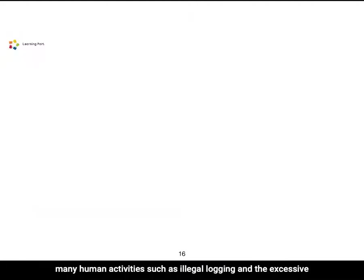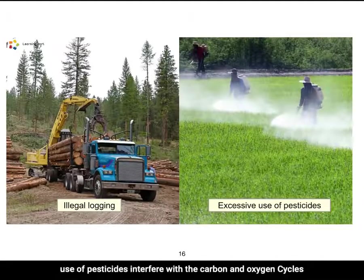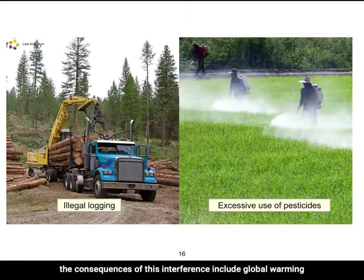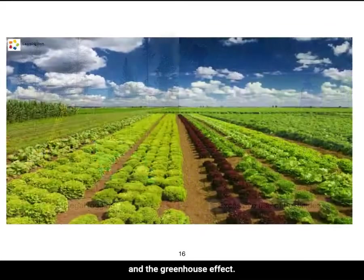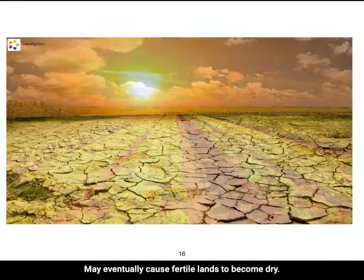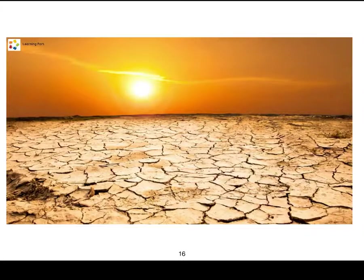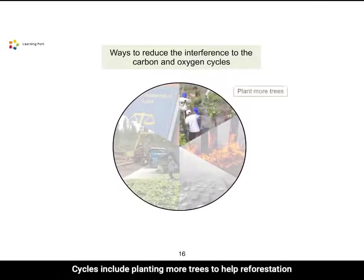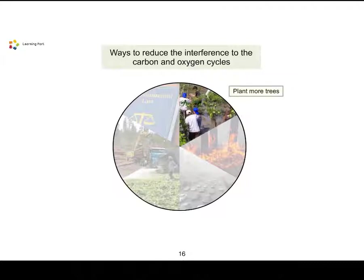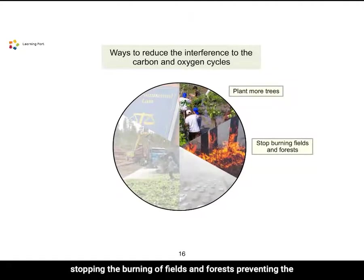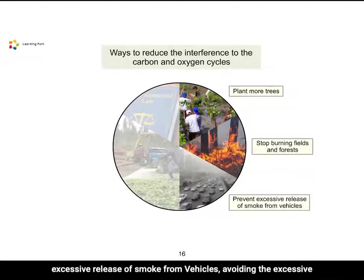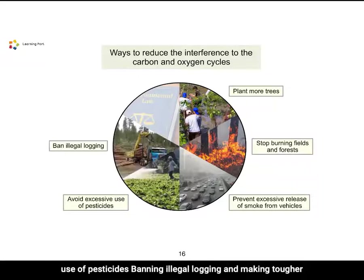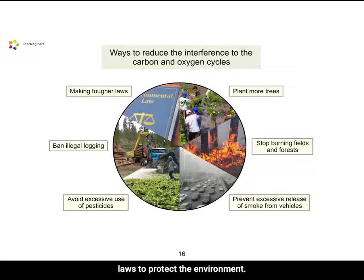Many human activities, such as illegal logging and the excessive use of pesticides, interfere with the carbon and oxygen cycles. The consequences include global warming and the greenhouse effect, which may eventually cause fertile lands to become dry. Ways to reduce interference include planting more trees for reforestation, stopping the burning of fields and forests, preventing excessive vehicle smoke emissions, avoiding excessive pesticide use, banning illegal logging, and making tougher laws to protect the environment.